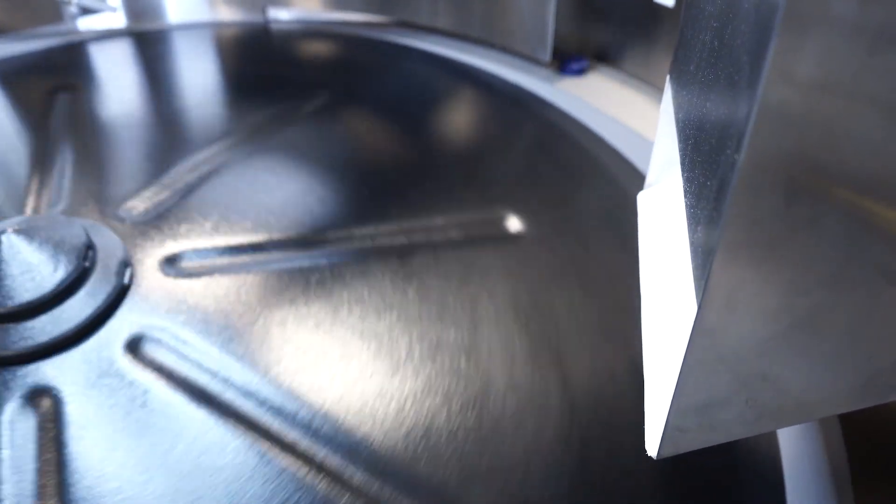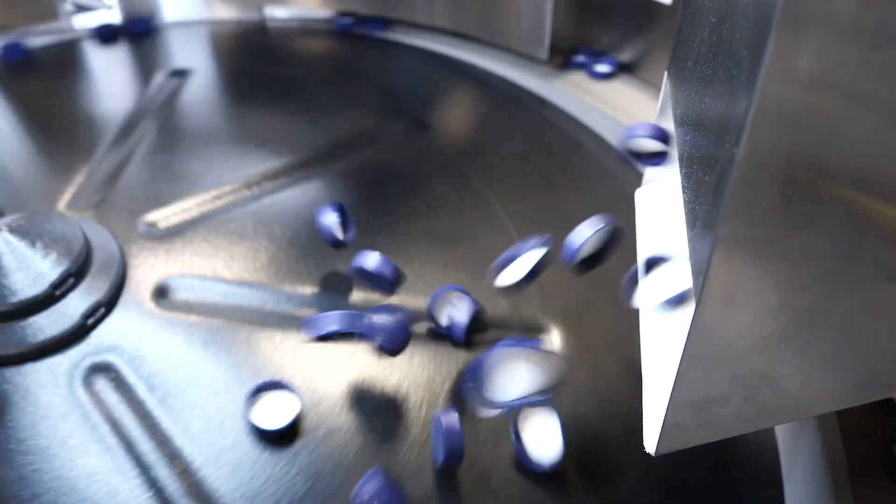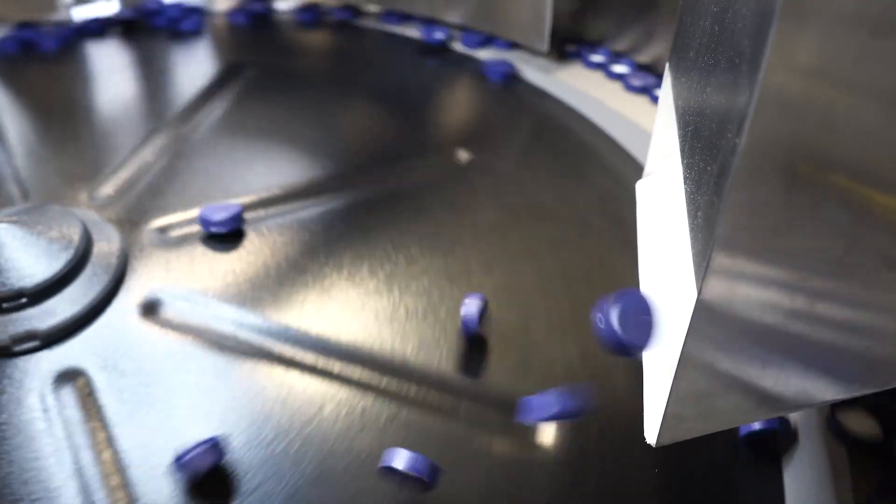Centrifugal feeders are a type of automation equipment that use centrifugal force and custom tooling to orient bulk randomly oriented parts to provide a consistent feed of correctly oriented parts to a larger process.